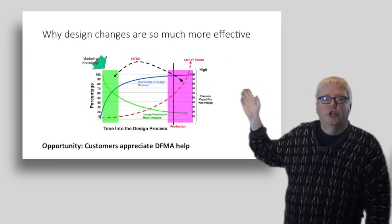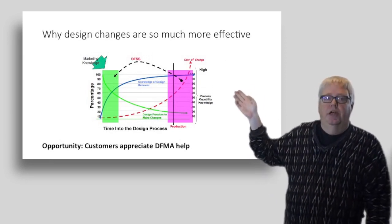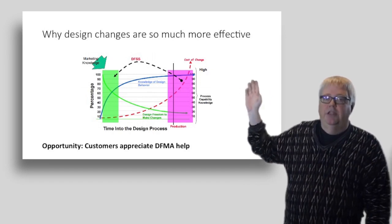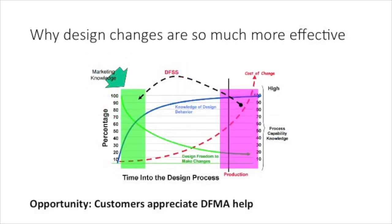This chart shows why changes at design time make a bigger difference. The issue is the cost of a change and you can see that goes up really rapidly as we move into production. Changing things on a CAD drawing is cheap. Retooling a manufacturing process is expensive so it's very important to address these opportunities as early as possible.